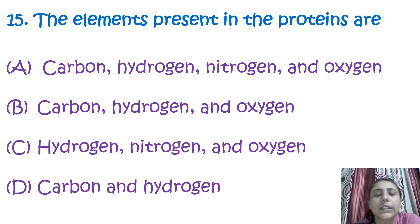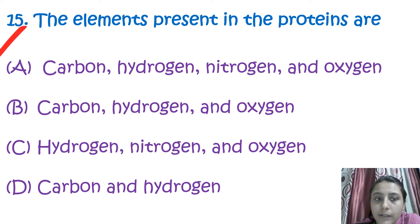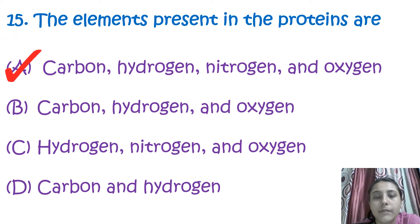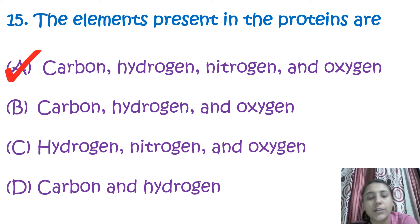The next question is: what elements are present in protein? The elements present in protein are carbon, hydrogen, nitrogen, and oxygen.